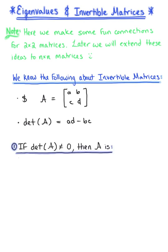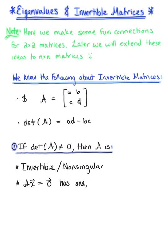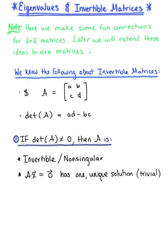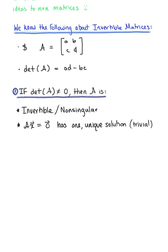The first case: if the determinant of A does not equal 0, then we conclude that matrix A is invertible, or non-singular. This is telling us that the matrix equation A times vector x equals the zero vector has one unique solution — a trivial solution. With eigenvalues and eigenvectors, we are concerned with the non-trivial solution case.